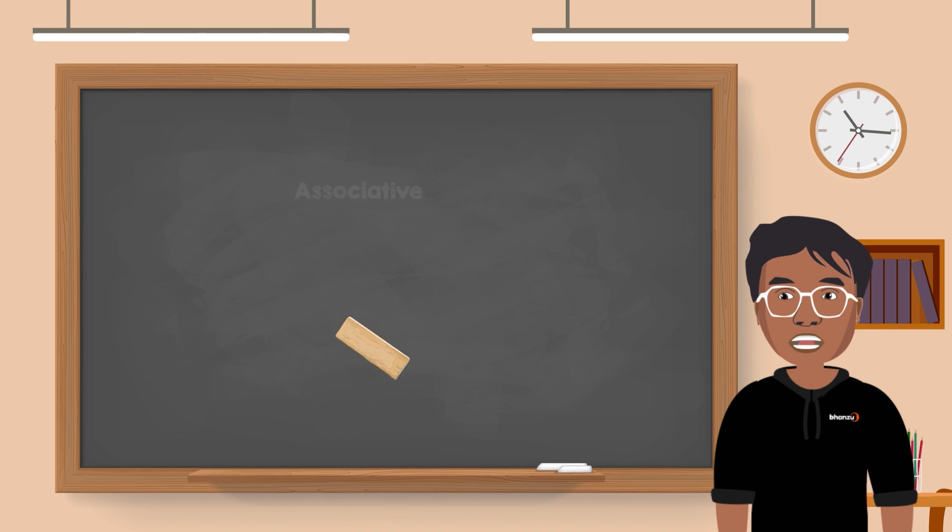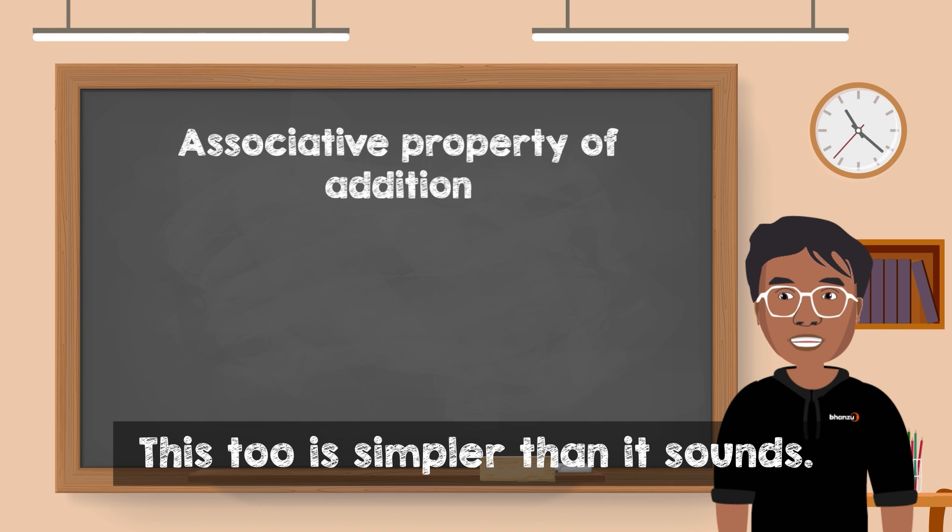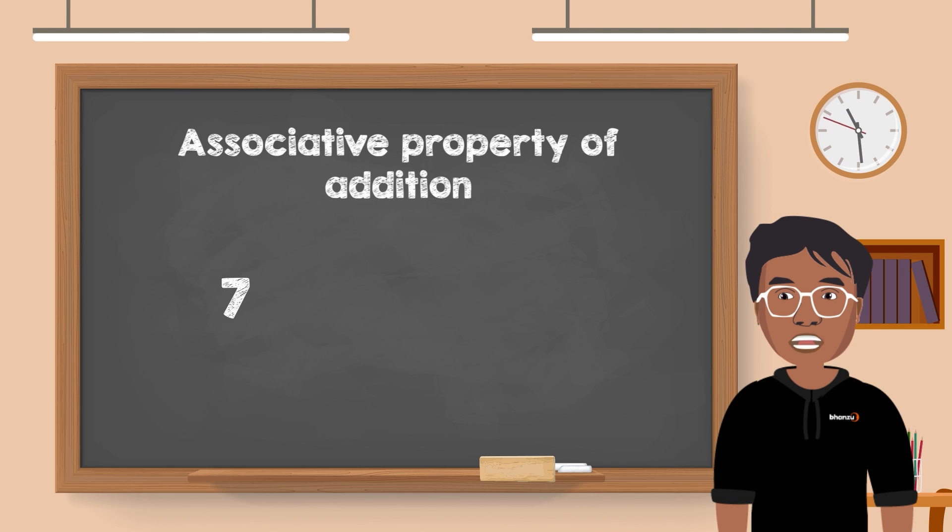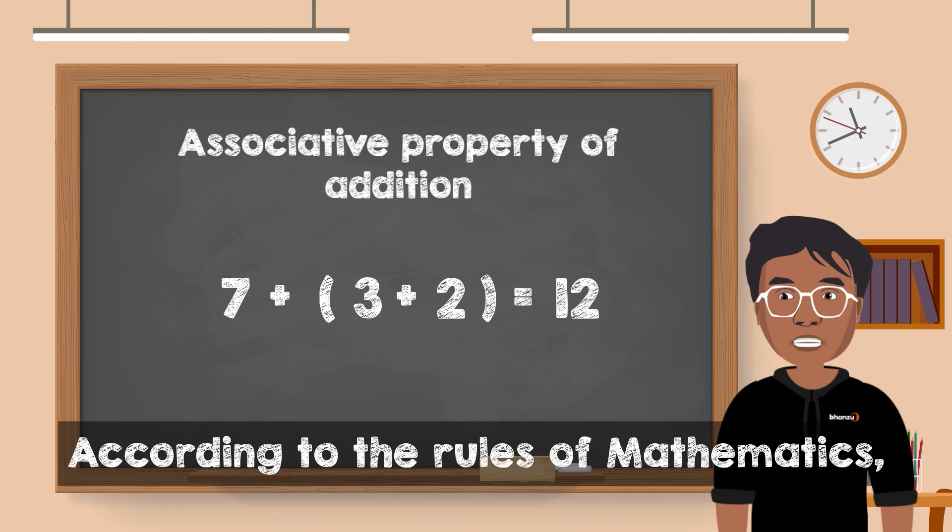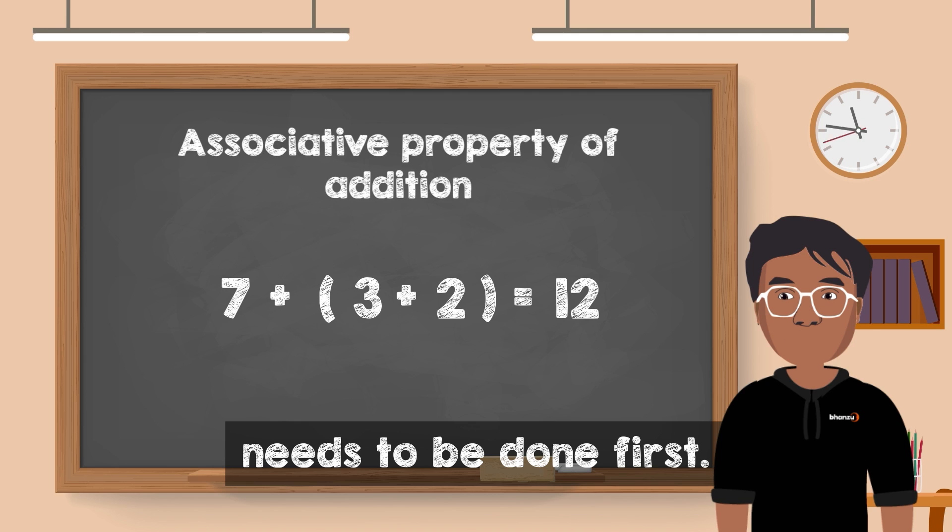Next, we have associative property of addition. This too is simpler than it sounds. Let's look at it with an example. 7 plus 3 plus 2 inside the bracket is equal to 12. According to the rules of mathematics, the sum in the parenthesis needs to be done first.